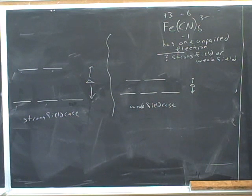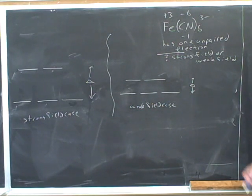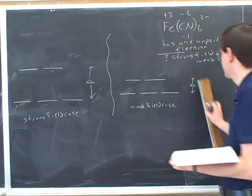So it will be given, for example, it has one unpaired electron. That's our clue. Yeah, they've given us that clue and now we're supposed to use that to figure out whether we're in the strong field or weak field case. And we'll go through together how to figure that out.